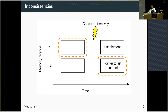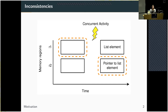Our memory acquisition process starts and first acquires this first region in the orange square. Then due to concurrent activity, our acquisition process doesn't continue. Some other things happen and suddenly we get a new list element in our task list and a pointer to this new element. Now we acquire the second region that contains the pointer to the list element. This means that in our memory image we have an inconsistent state — a next pointer pointing to a memory region with random memory or an older list element.